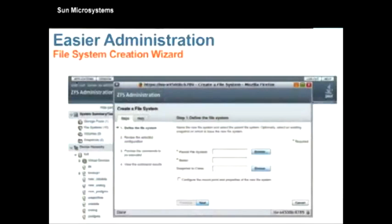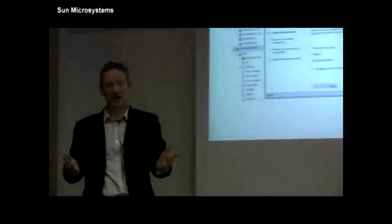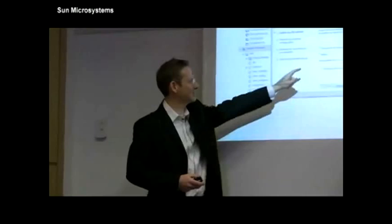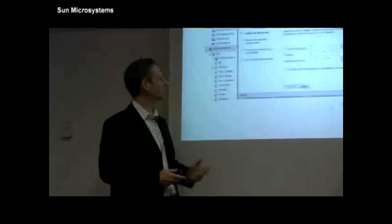Here's the create a file system wizard. So once I've created a storage pool, I can go and create file systems out of it. Not a lot to tell it, really. I just tell it what the parent file system is. So when I mount a storage pool, say I call it tank, then the storage pool will be by default mounted as slash tank. Give the file system a name. And bingo, I'm done. I don't have to tell it how big the file system's going to be.